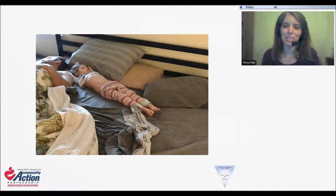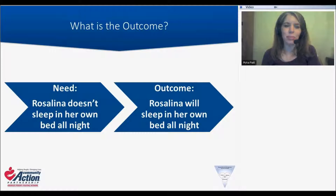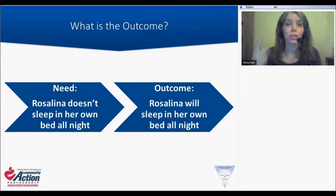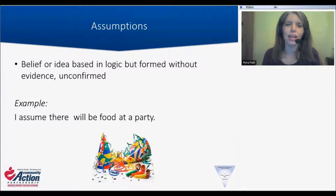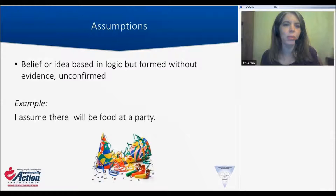Our need is that Rosalina doesn't sleep in her own bed all night. And the outcome that we identified is that Rosalina will sleep in her own bed all night. As part of the theory of change, we are asked to think more critically and start to think deeper about our plan. Part of that process is to identify the underlying assumptions that we all bring into the planning process. An assumption is a belief or idea that's based in logic but formed without evidence and it's unconfirmed. It's not fact — it's something that logically makes sense to us, but we don't have the evidence to back it up.